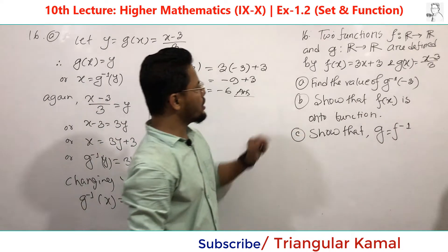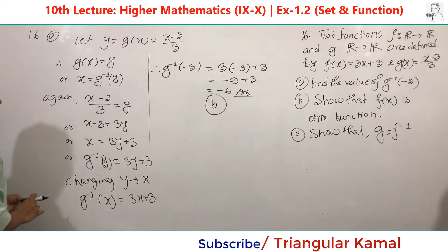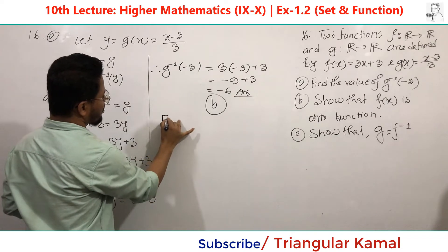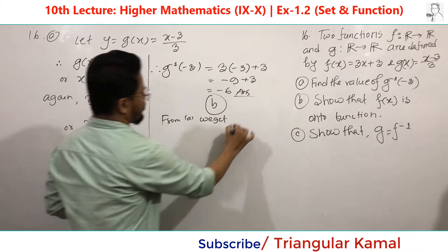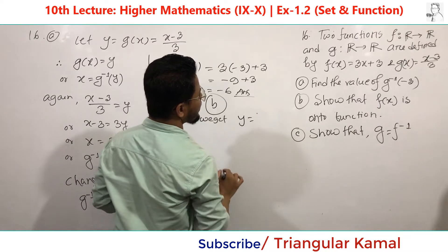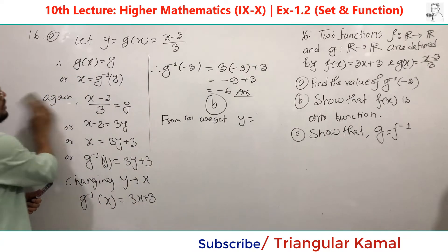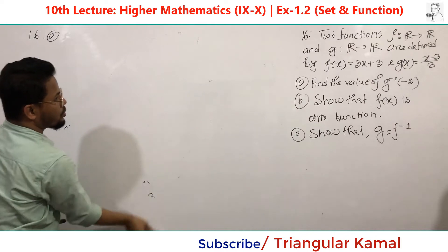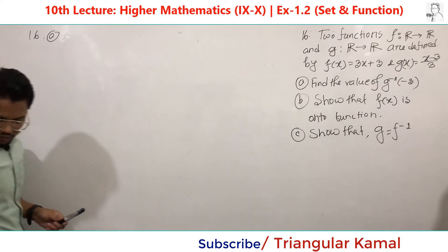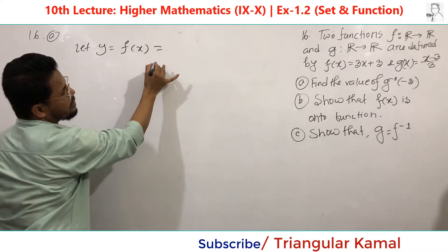The second question: show that this function is onto. We cannot apply part A here because we have done that for function G. So we start from question number B, which requires us to show that F of X is an onto function.